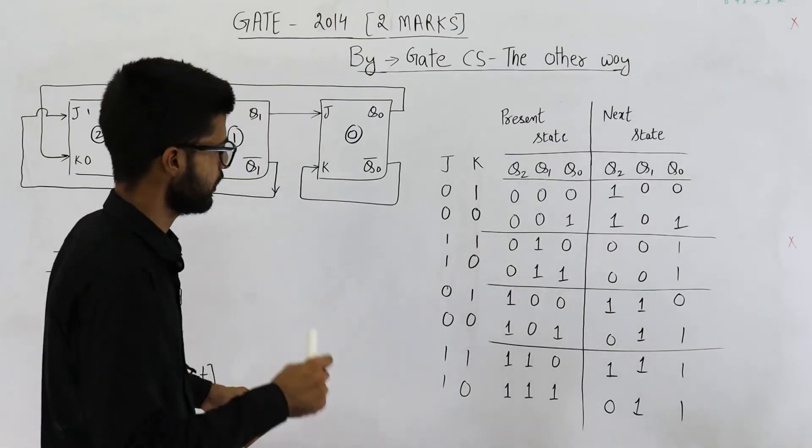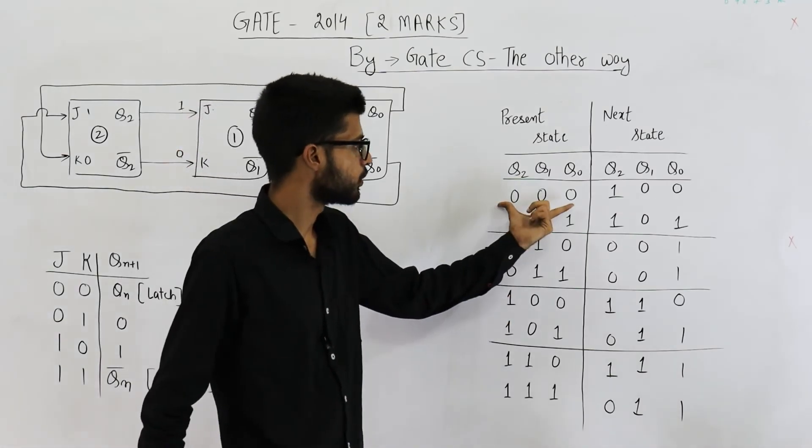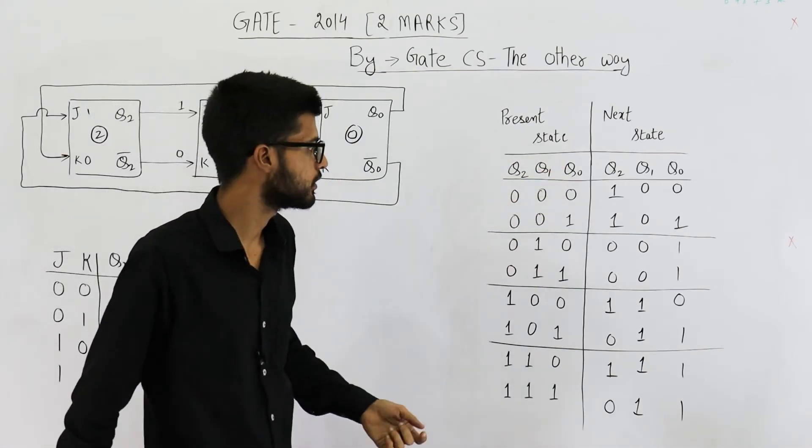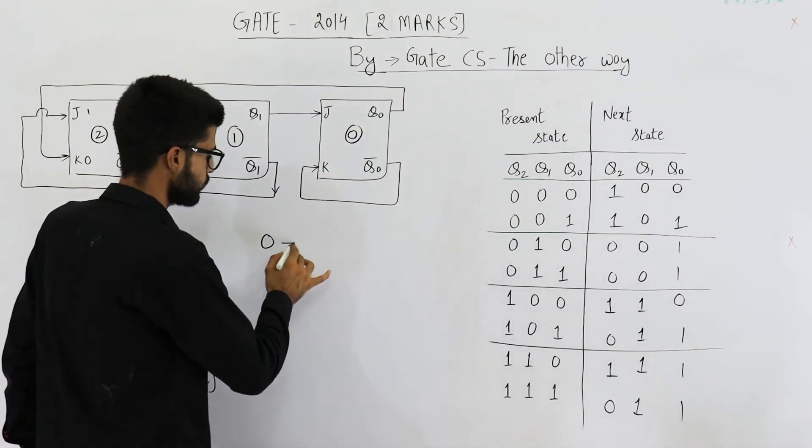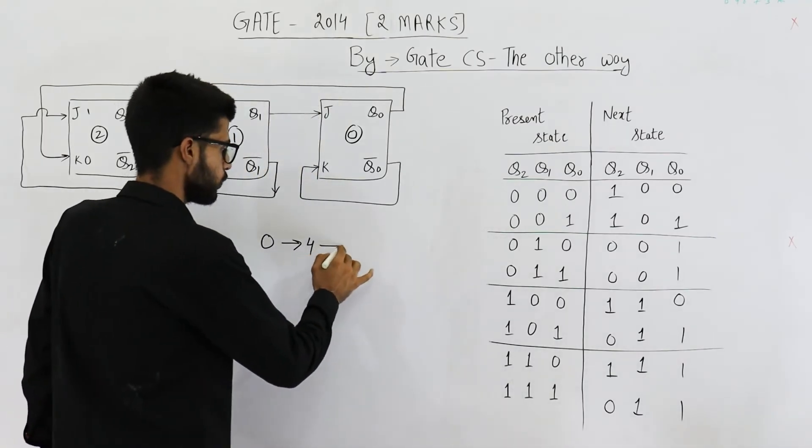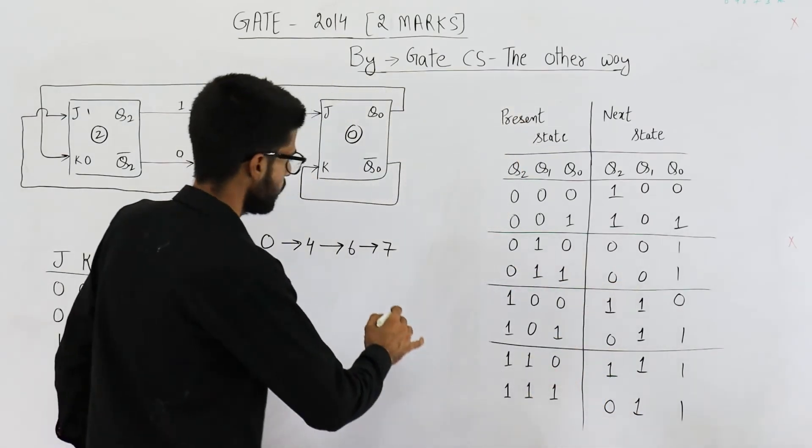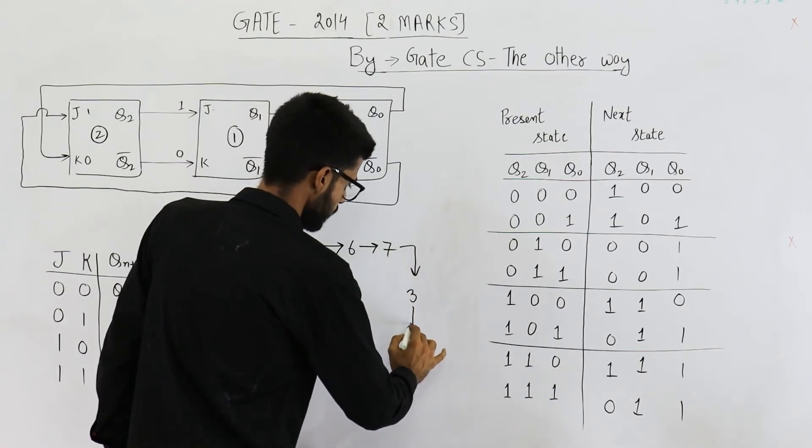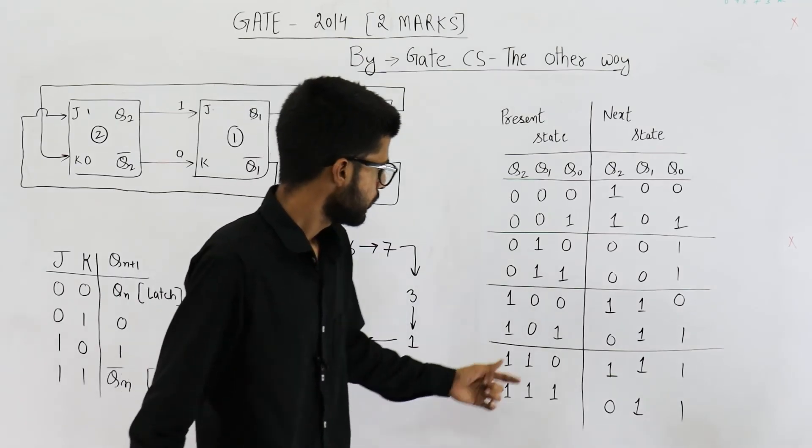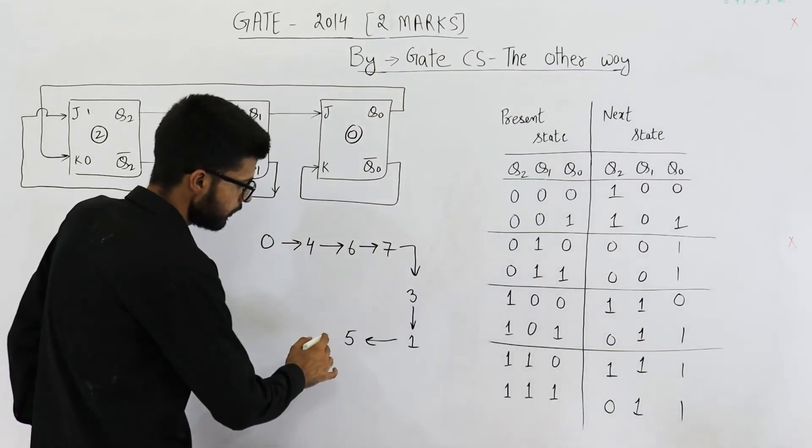Now let us draw the state transition diagram. They are saying, if initial state is 0, so we begin from 0. If values of Q2, Q1, Q0 are 0 and a clock is received, the next values will be 1,0,0. That means 4. If currently, we are on 4, we will go to 6. From 6, we go to 7. So 4 goes to 6, 6 goes to 7. Then 7 goes to 3, 3 goes to 1. 1 goes to 5. So 5 goes to 5. If we are currently on state 5, upon giving a clock, the counter will go to state 3. So 5 goes to 3. Like this.